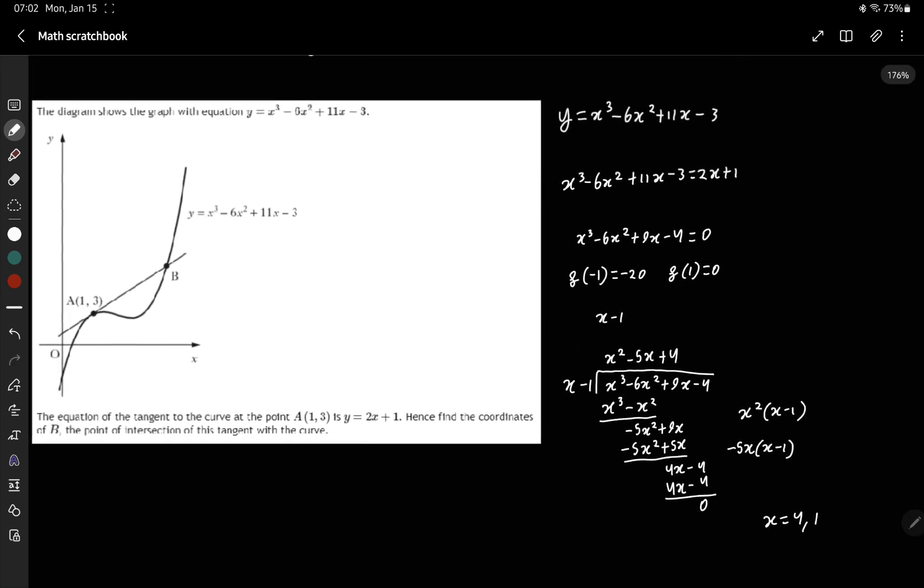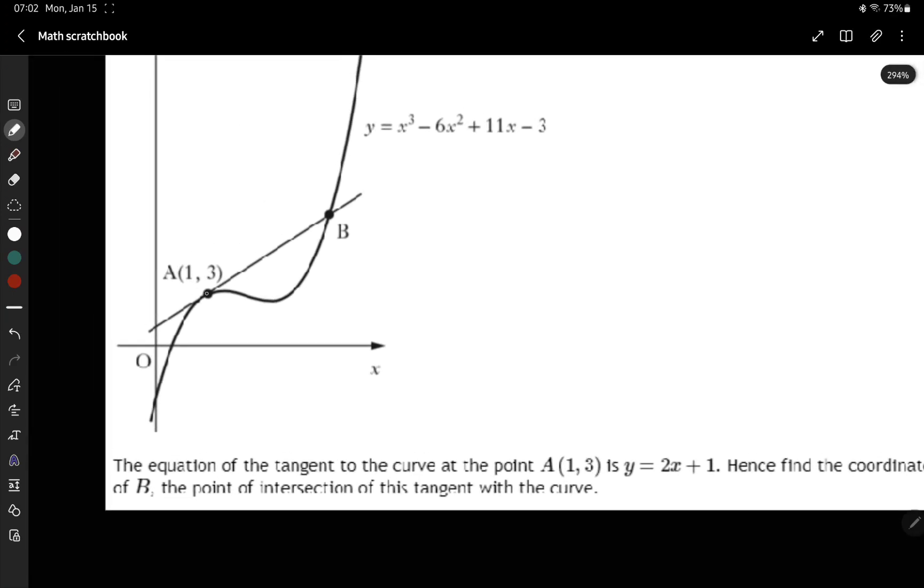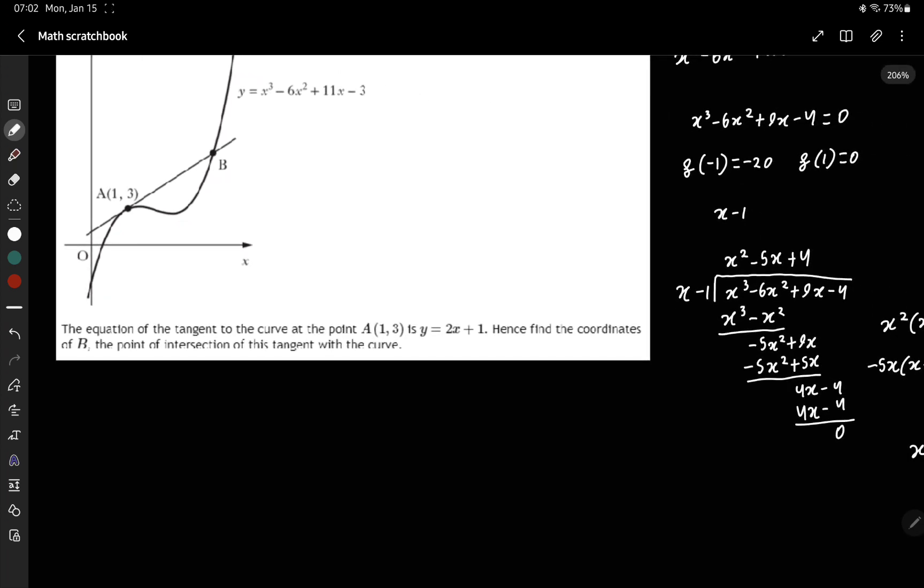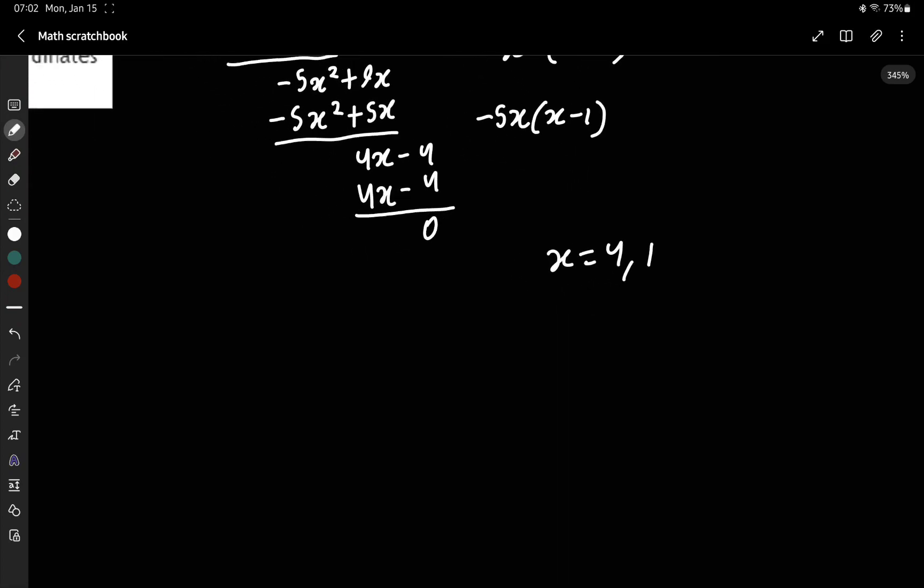Logically, it's not going to be 1, because we already have the intersection at 1. At point A, the intersection is at 1, so it cannot be 1 again.